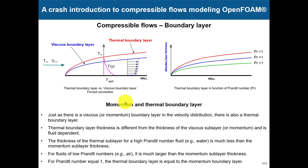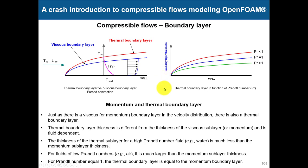Let's talk about momentum and thermal boundary layers. In turbulence we discussed boundary layers, but we didn't mention that the boundary layer also has a dependence on temperature. You will have a temperature gradient that affects your boundary layer. Besides the viscous boundary layer, we now have a thermal boundary layer, with a dependence on the Prandtl number. For fluids where the Prandtl number is larger than one, the boundary layer becomes thinner; when it is less than one, it becomes thicker.